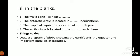Fill in the blanks. The frigid zone lies near blank. Second, the Antarctic circle is located in blank hemisphere. Third, the Tropic of Capricorn is located at blank degrees. Fourth, the Arctic circle is located in blank hemisphere. I will give you another exercise.